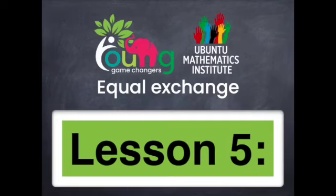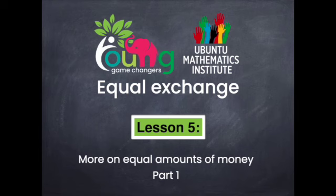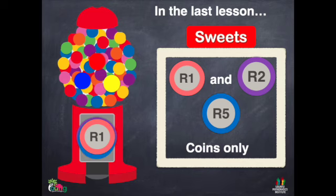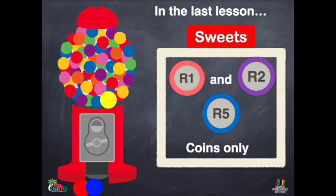Let's keep talking about equal amounts of money in part 1 of this lesson 5. Remember in the last lesson, my sweet machine that takes 1 rand, 2 rand and 5 rand coins. If you insert coins, then sweets come out of the machine.